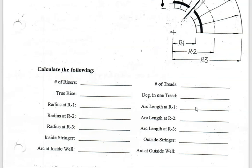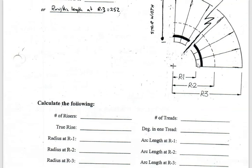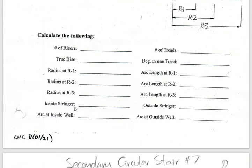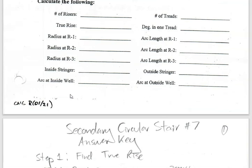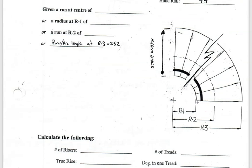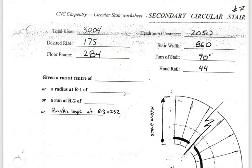Those are two code requirements that allow us to build stairs at these dimensions. We'll also be looking for arc length at R1, and arc length at locations R1, R2, and R3. We're also going to get an estimate for the length of the stringer — the inside stringer and the outside stringer — and the arc at the inside of the well and outside of the well, which refers to the stairwell opening: how far we'd have to come before we can frame off above.